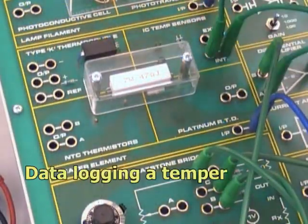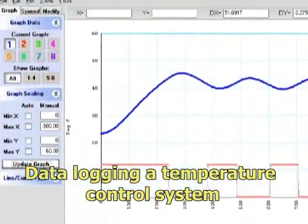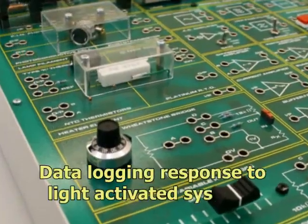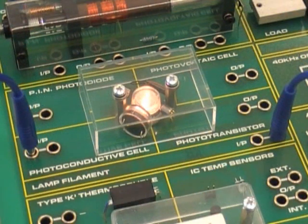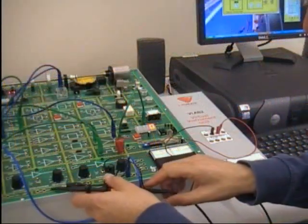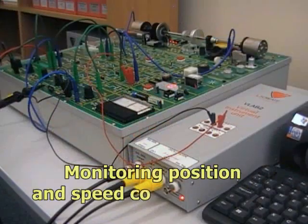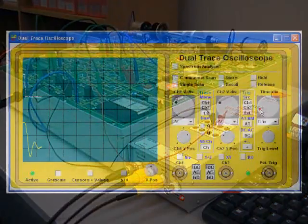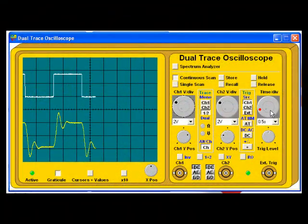Activities include data logging an on-off temperature control system, data logging the response of optical transducers and light-activated systems to incident light, and using the virtual instrumentation for more in-depth study of position and speed control systems on the D1750 trainer, incorporating proportional, integral and derivative control.